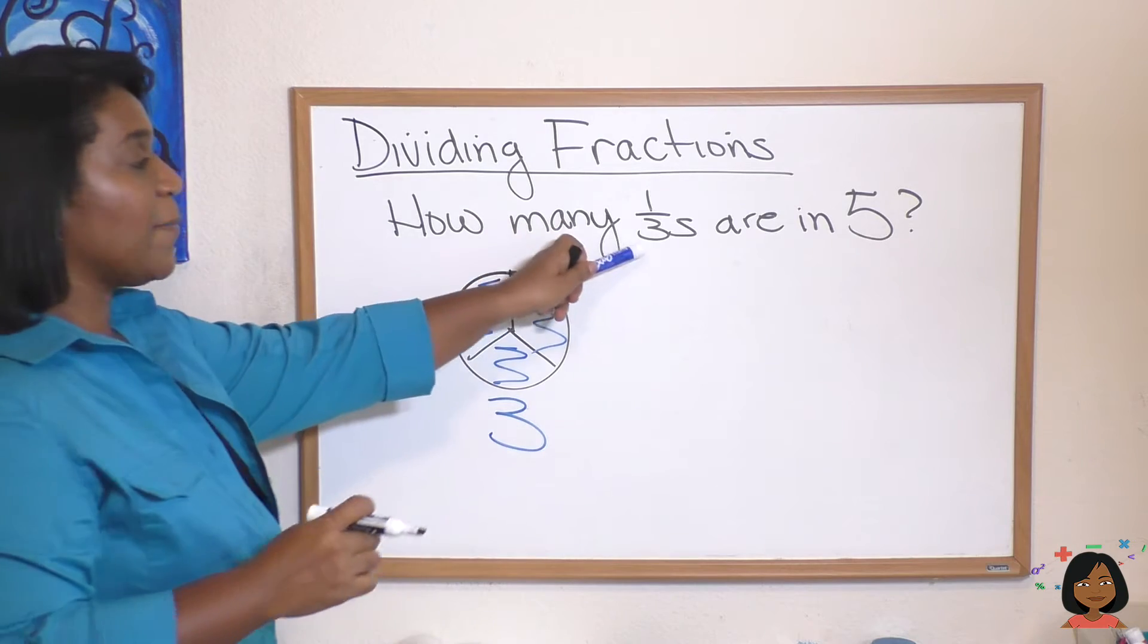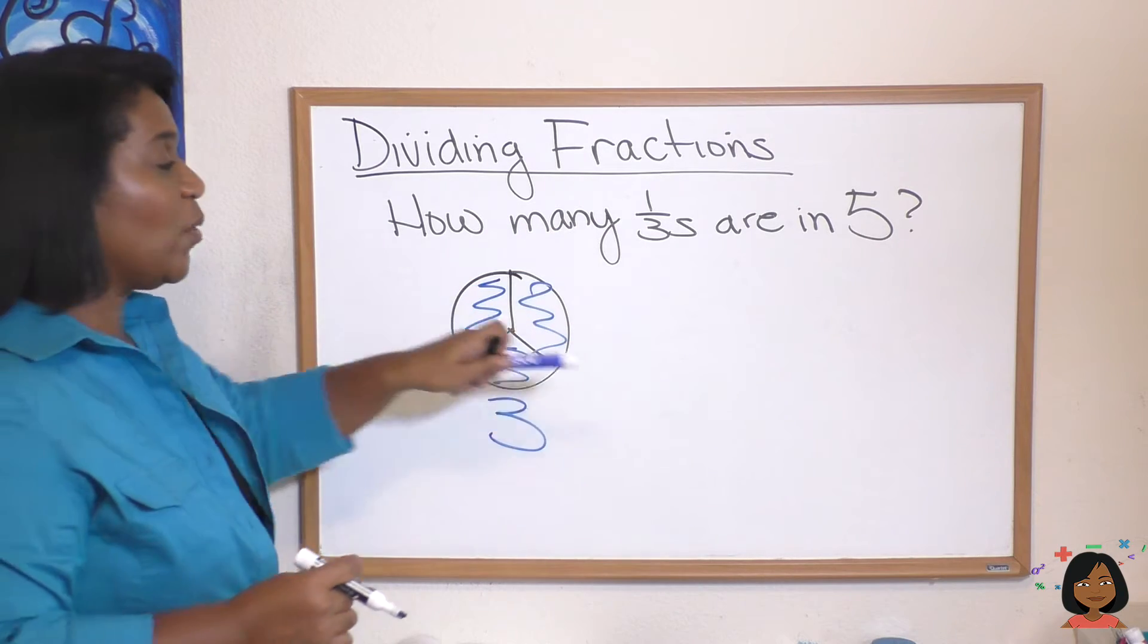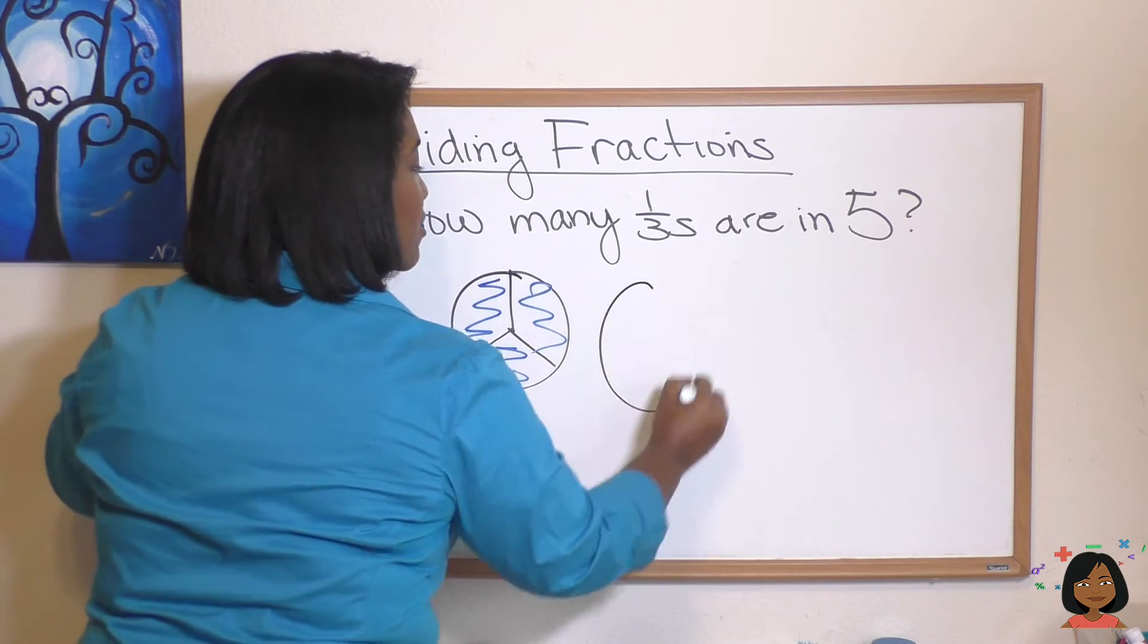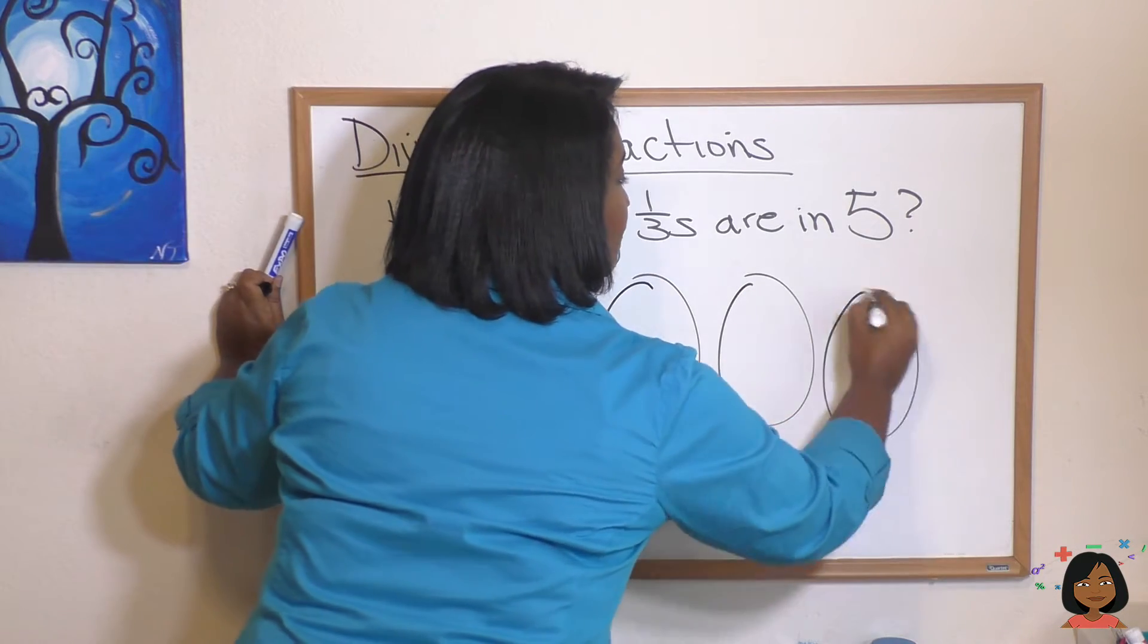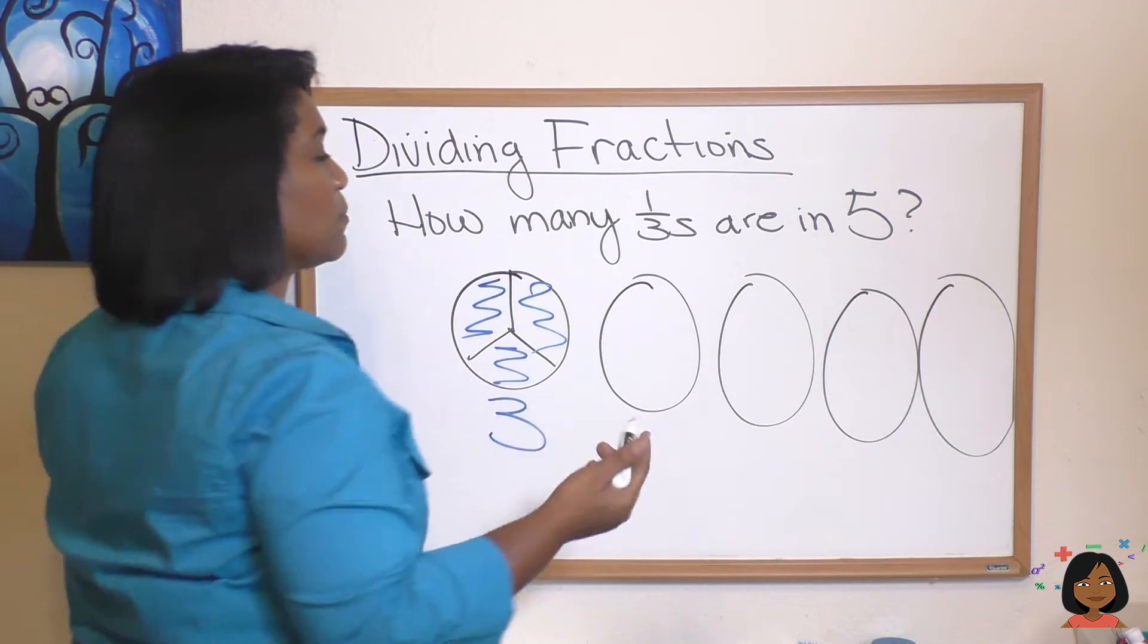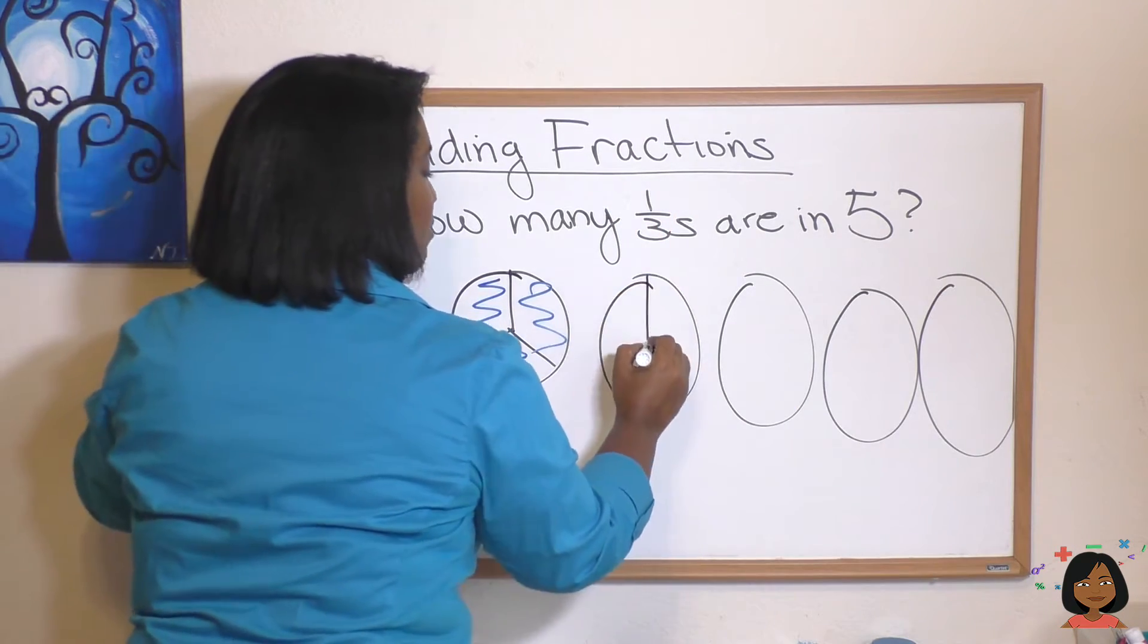Good. Now they don't want to know how many one-thirds are in one. They want to know how many one-thirds are in five. So here's my first, here's my second, my third, my fourth, and I barely left enough room for my fifth. Okay I know they're not really circles but just stay with me.